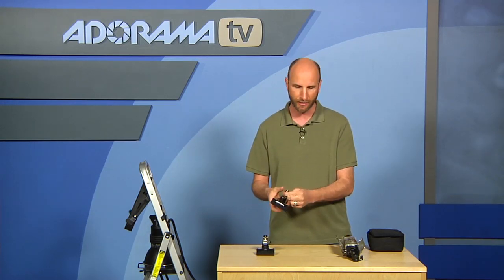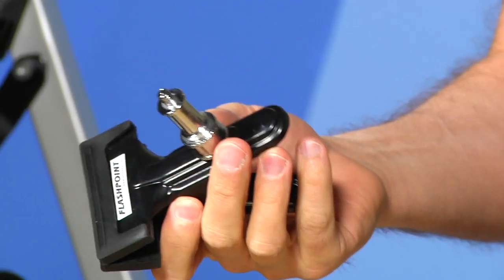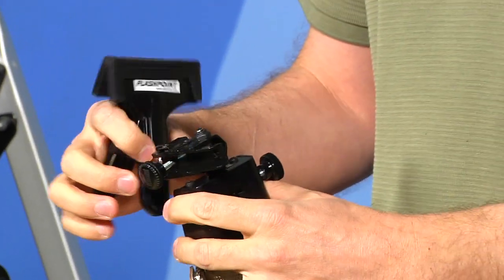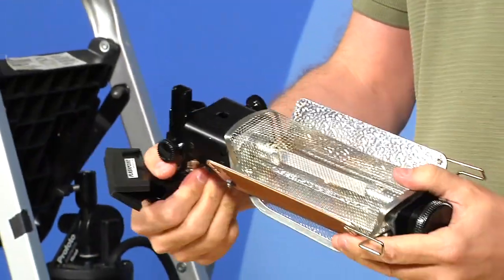And I want to start with this guy. This is the Flashpoint Clamp with the stud. And this stud is meant for just normal studio lights. And so I can show you really quickly that this is a Lowel light. You can see that it just goes right on there. And then I can just fasten it and there it is.